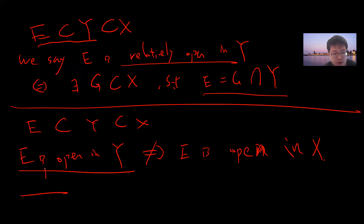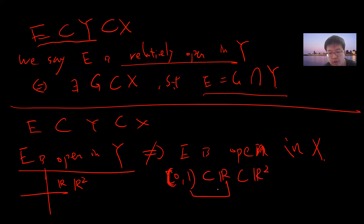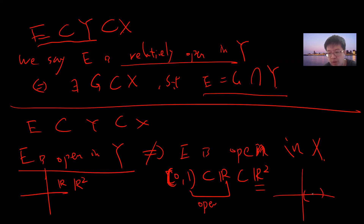A simple example: take R² and R. Consider the interval (0,1) as a subset of R, which is a subset of R². In R, (0,1) is open by definition — it's just an open interval. But (0,1) is not open in R², because any open ball centered at a point in (0,1) contains points with nonzero y-coordinate. So being open in a smaller space does not imply being open in a larger space.